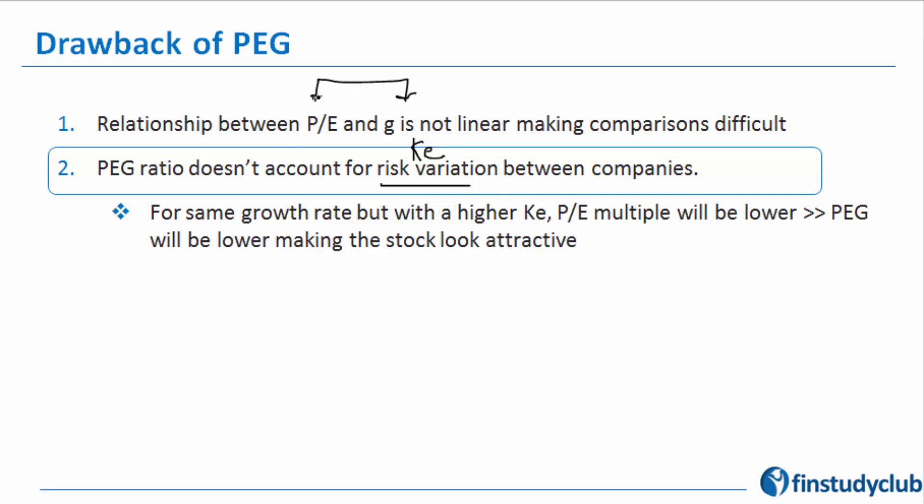Another aspect here as a drawback of PEG is that the relationship between P and G is not linear. For a 1% increase, it's not going to have a 1% change in your PE. This is a little quadratic and makes the comparison a little difficult.